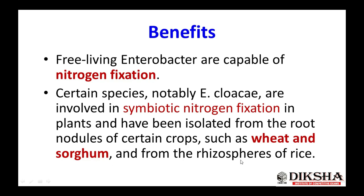Enterobacter cloacae has been isolated from the root nodules of certain crops such as wheat and sorghum, and from the rhizospheres of rice. This symbiotic nitrogen fixation involves mutual benefit — the bacteria and plants share resources such as food and shelter, representing a mutualistic relationship in the rhizosphere environment.